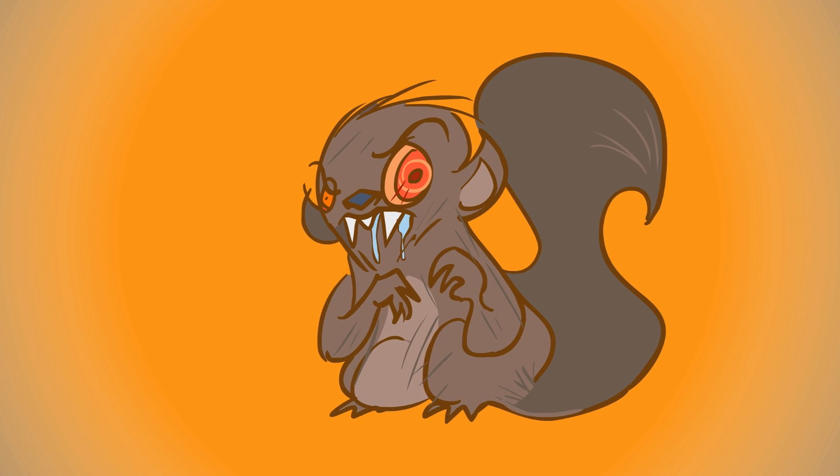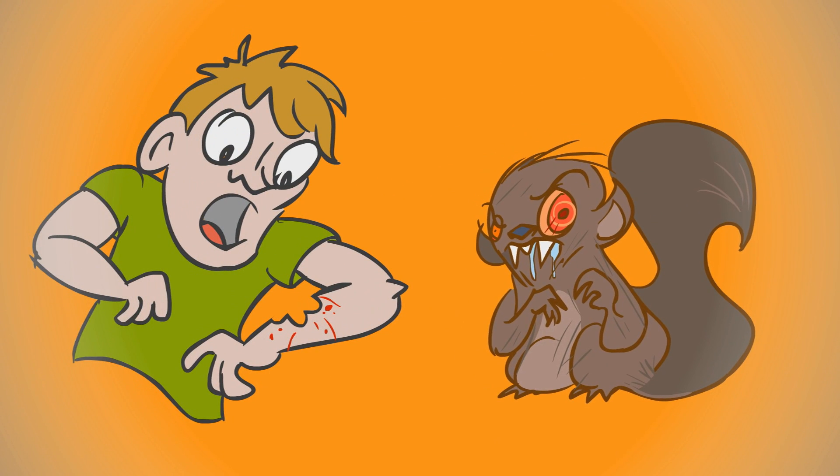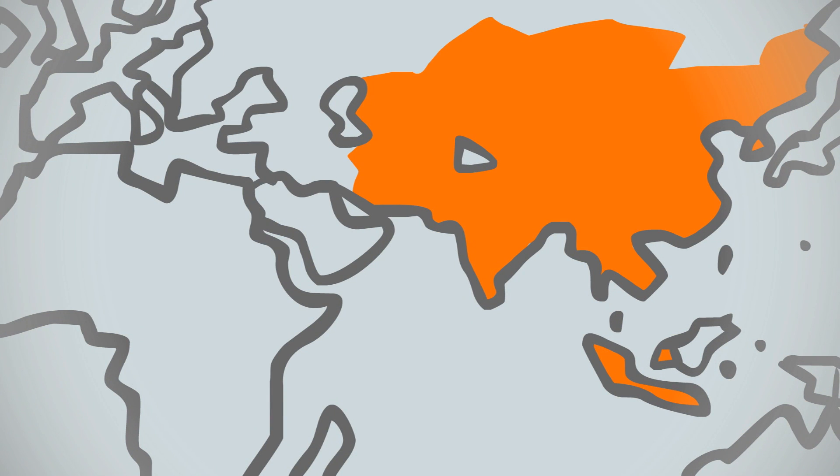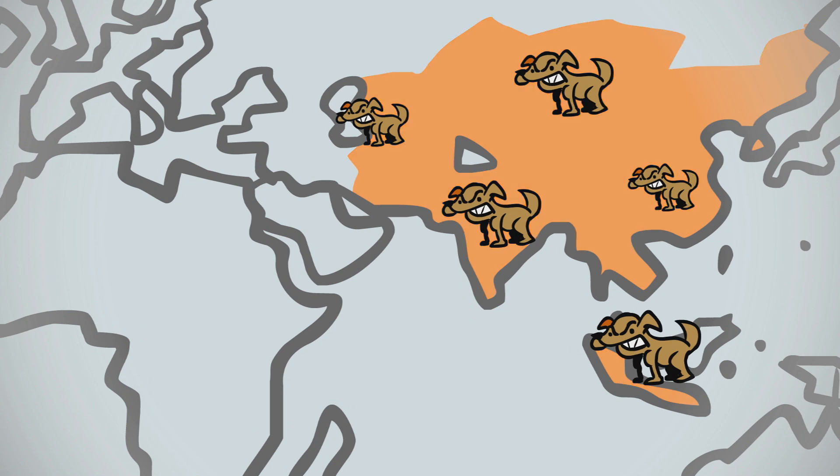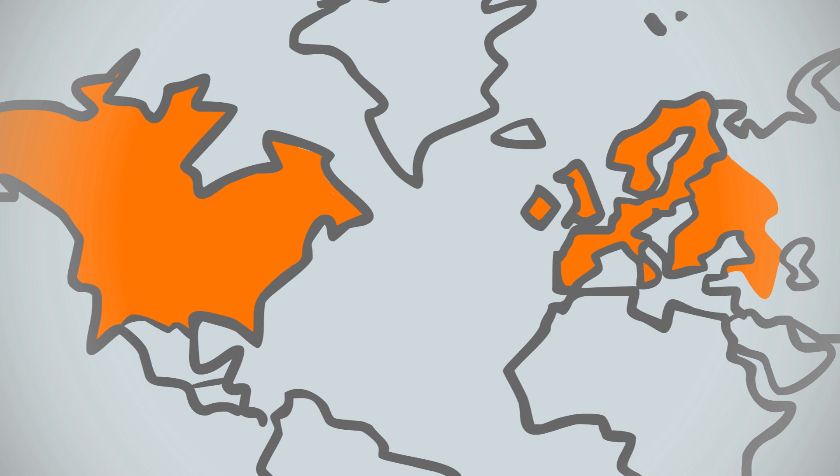Rabies is transferred to humans through contact with infected animals, usually through a bite or scratch. The virus is spread by different animals depending on where you live. In Asia and India, it's spread mostly by rabid dogs. In Europe and the Americas, it's often spread by bats.